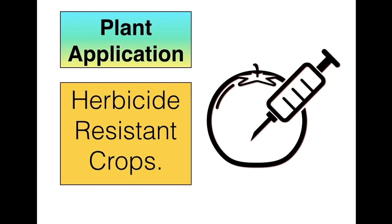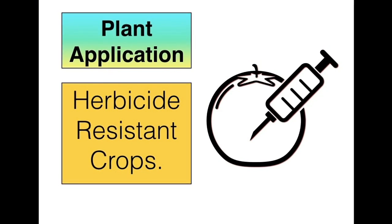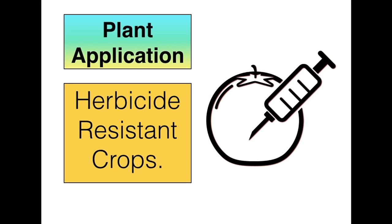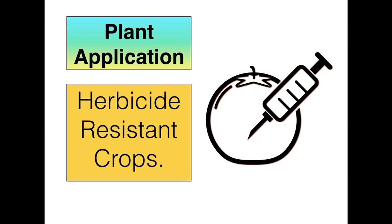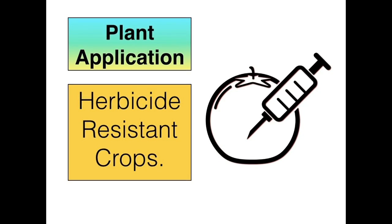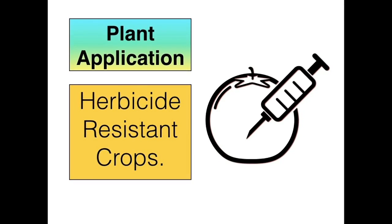A plant application of genetic engineering is herbicide-resistant crops. The introduction of a gene that makes crops resistant to particular types of chemicals or herbicides. Once they are sprayed with these chemicals, they kill only the weeds and don't harm the crops.